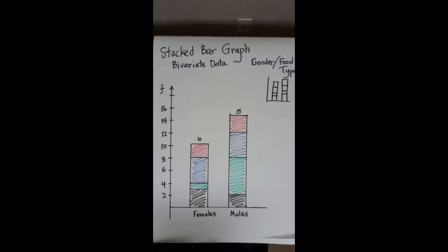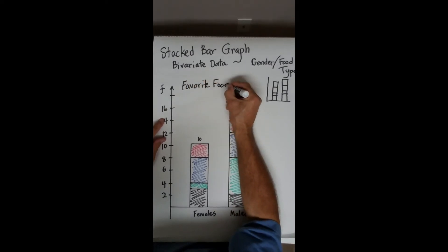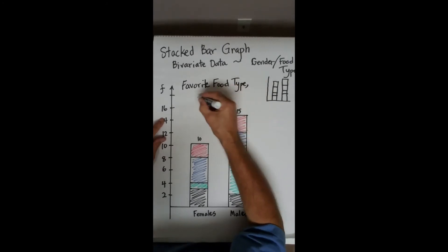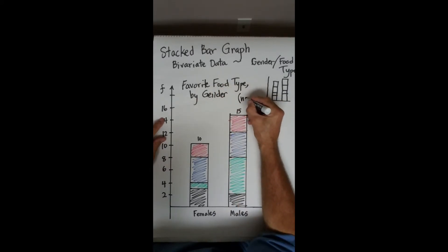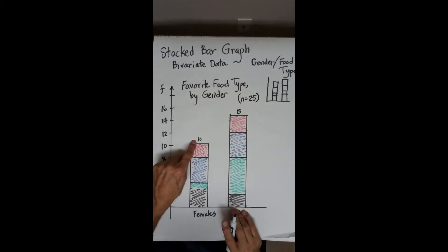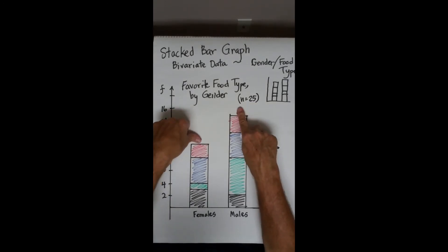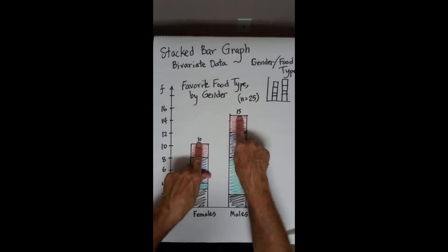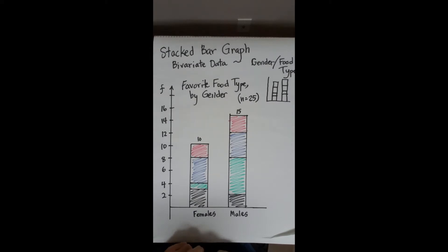Beside your title of favorite food type by gender, n equals 25. One of the practical uses for these two numbers is you know what the sample size is, but without telling the reader that they would have to add them up. You can immediately tell your reader there were 10 females and there were 15 males.